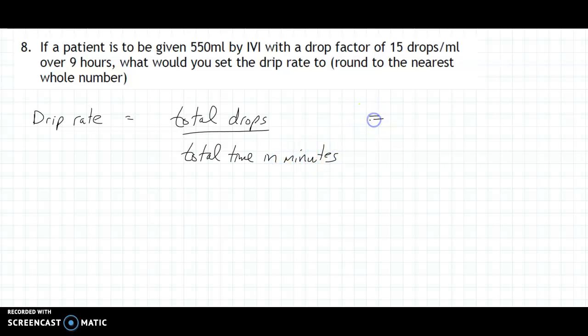Now the total drops, 15 drops per mL, 15 drops for each mL, so that's going to be 15, just a drop factor of 15 multiplied by the number of mLs, 550. Because there's going to be 15 drops for each of those mLs.